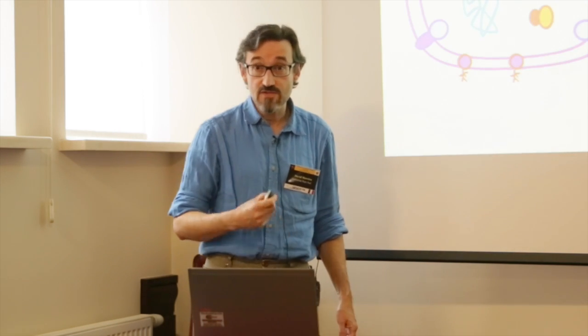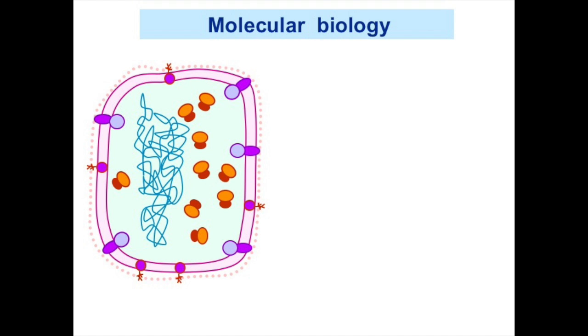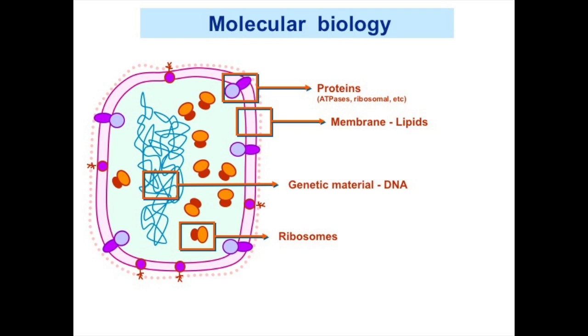It is true that many things are shared by all living beings, and perhaps the most important is that all of them are composed of cells. In cells we find several things common to all species: membranes made of lipids, many well-conserved proteins such as ATPases and ribosomal proteins, genetic material which is DNA, and complex ribosomes responsible for protein synthesis.